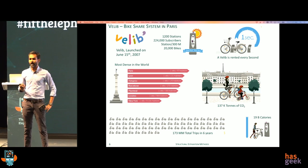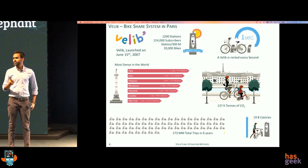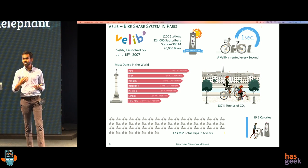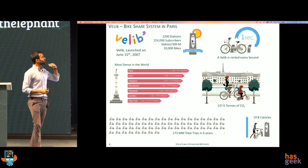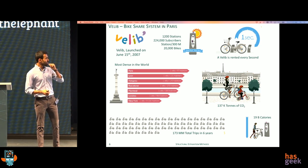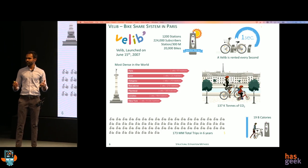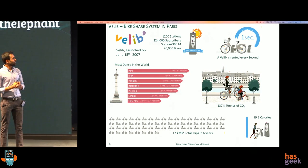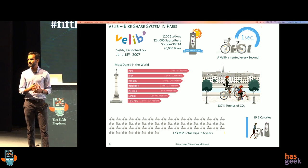The concrete system I'll be looking at is the Vélib system, a huge bike share system in Paris. Launched in 2007, it's one of the most popular bike share systems around the world and one of the first modern systems of its kind. It has more than 1,400 stations, about 20,000 bikes, hundreds of thousands of subscribers, and has done over 173 million trips in the last six years. It has had a huge impact in terms of carbon savings and health benefits, replacing car trips with bike trips.